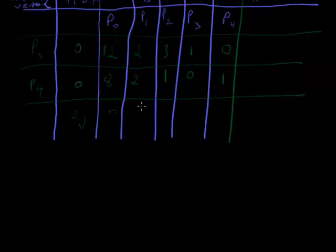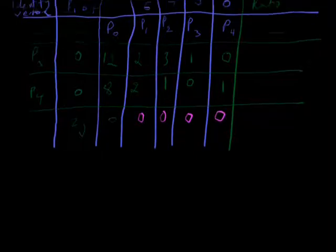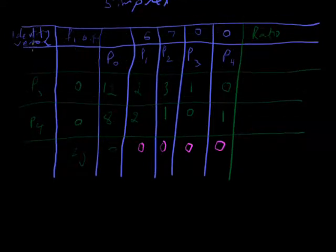Here is also 0, here is also 0, 0, 0. Means in simple word, you multiply identity vector with P0, P1, P2, P3, and P4.